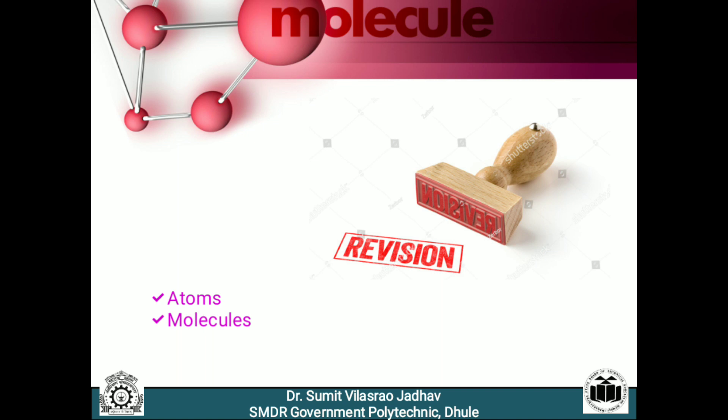Take an example of a water molecule. The formula of water is H2O, that is its molecule contains two atoms of hydrogen and one atom of oxygen. The number of atoms in the molecule is called as the atomicity of that molecule or compound.